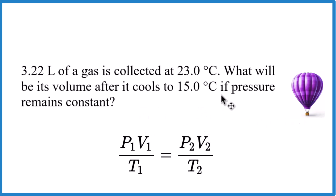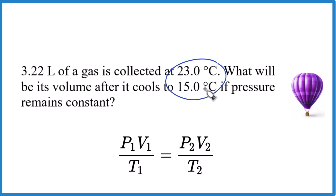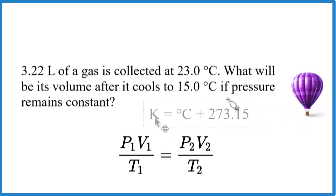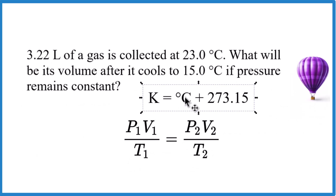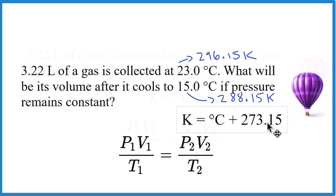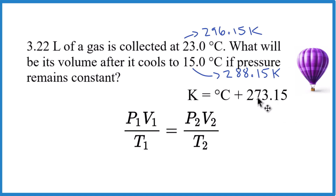There's something to watch out for: the temperature is in Celsius, and we really want to work in Kelvin. Sometimes it works in Celsius, but it's best to be in Kelvin. To convert, take the degrees Celsius and add 273 — that gives Kelvin. Do that for both temperatures. You always want to be working in Kelvin with both the ideal gas law and the combined gas law.